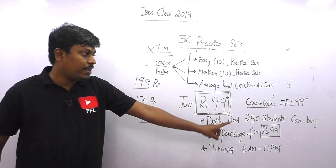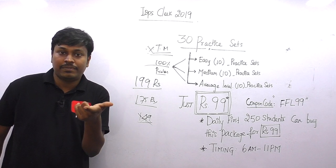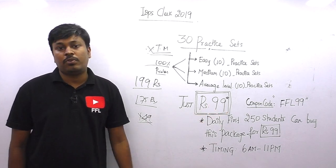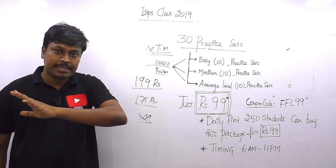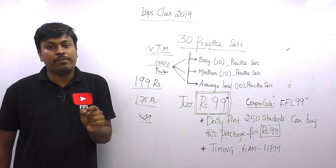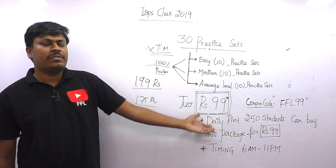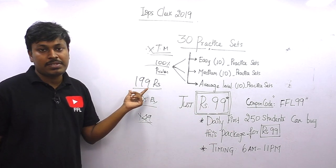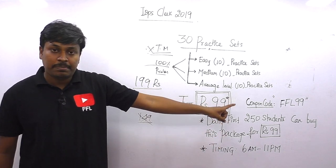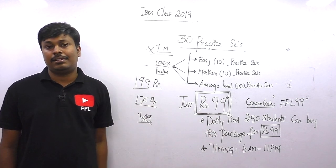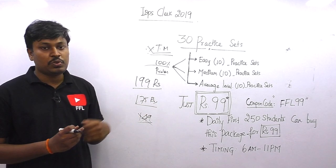Remember that every day, daily from morning 6 AM to 11 PM, you can use this code FFL99. The first 250 students can be able to buy the package for 99 rupees. You can use the same coupon code till IBPS Clerk Prelims exam, and remember every day only 250 students can purchase the package for 99 rupees. If you're the 251st student, then you can purchase the package for 199 rupees. This coupon code will be activated from morning 6 AM till 11 PM.